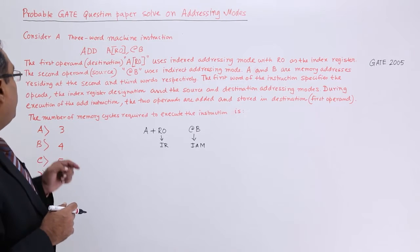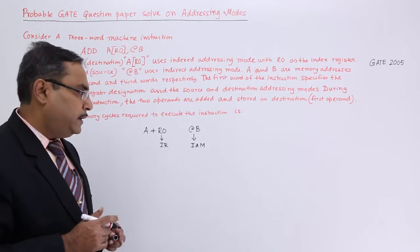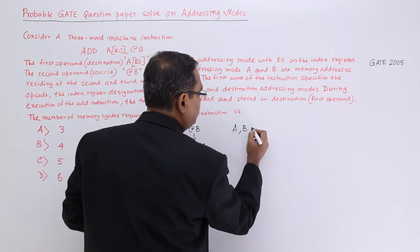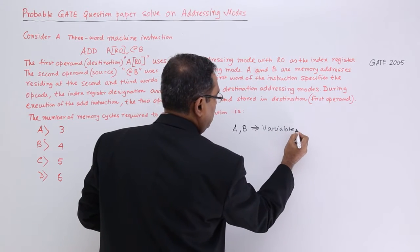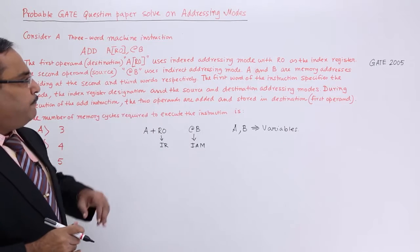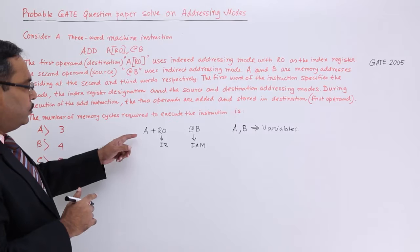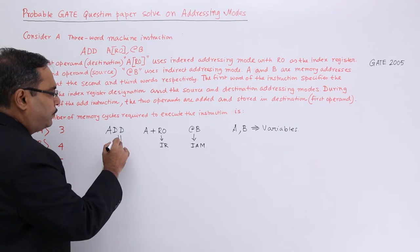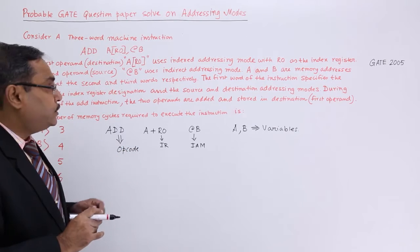A and B are memory addresses residing at the second and third words respectively. That means A and B are memory addresses — they are nothing but variables. The first word of the instruction specifies the opcode. So this ADD is the opcode — that is quite obvious. Opcode means operation code, means instruction.